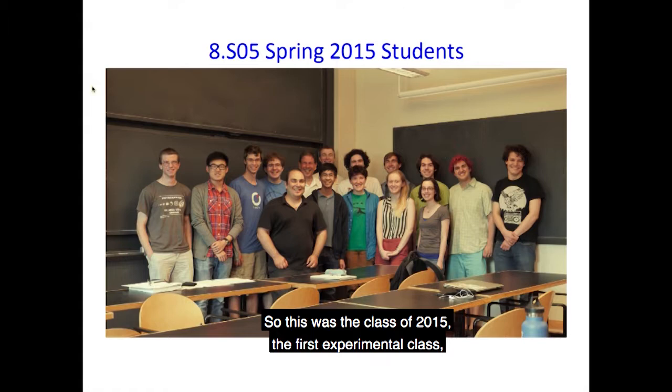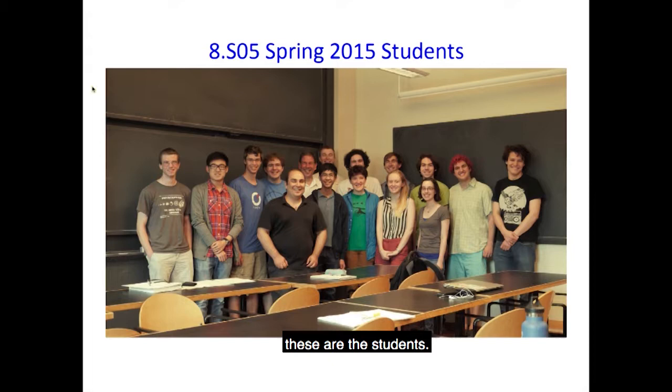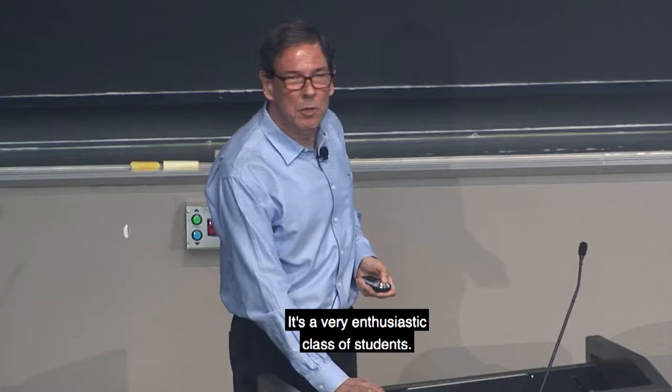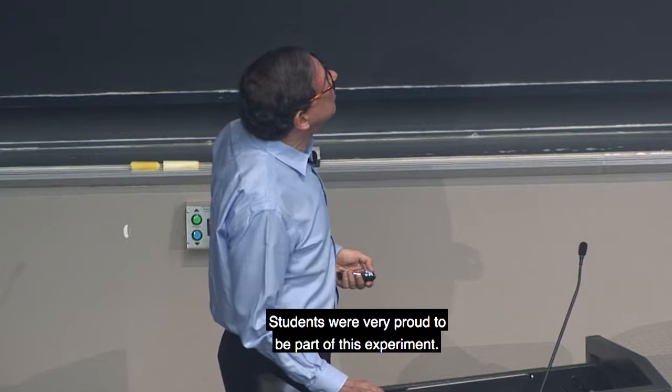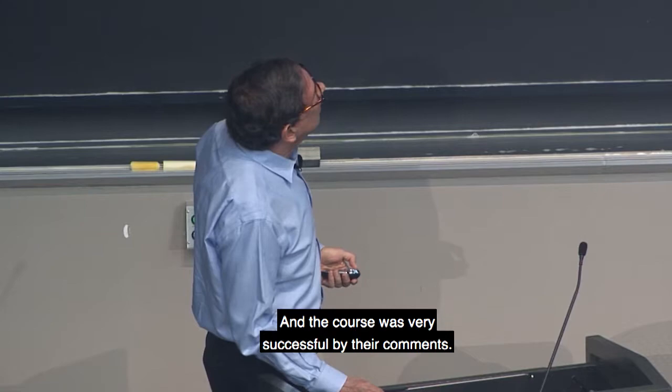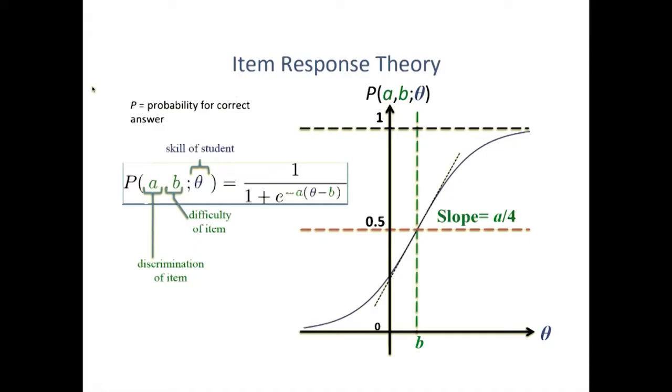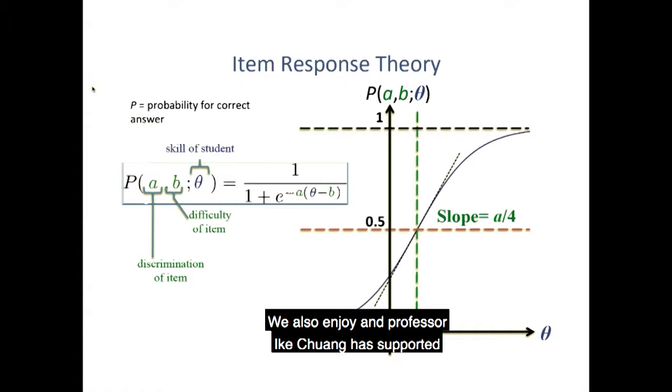So this was the class of 2015, the first experimental class. These are the students. Saif Ryan is in here. I'm somewhere there, a little bit here. It's a very enthusiastic class of students. Students were very proud to be part of this experiment. And the course was very successful by their comments. We also enjoy, and Professor Ike Chuan has supported some investigation with enormous data, thousands of students taking these things online, and students at MIT. For each problem, we can get a curve with some parameters that tells us how difficult is the problem and how discriminating it is.